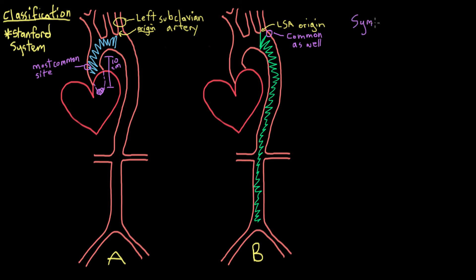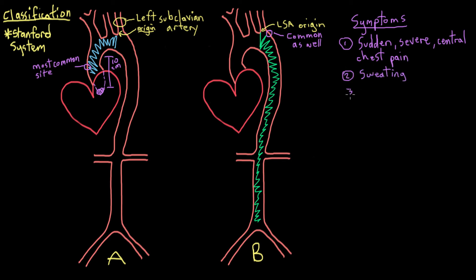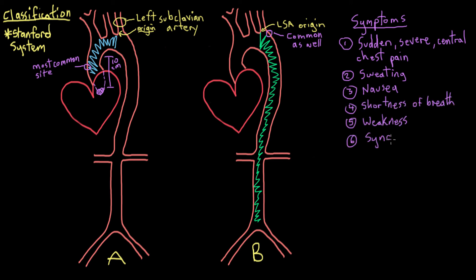Now, what symptoms might someone having an aortic dissection feel? The most commonly described symptom is a sudden onset of severe and central chest pain that often radiates to the back — patients often describe a tearing toward the back type of pain. The pain can also radiate down the arms, similar to the symptoms of a myocardial infarct, or heart attack. Other symptoms include sweating, nausea, shortness of breath, weakness, or syncope — that's fainting. And if you have an aortic dissection in your abdominal aorta, you might get abdominal pain that could radiate to your sides or toward your back.